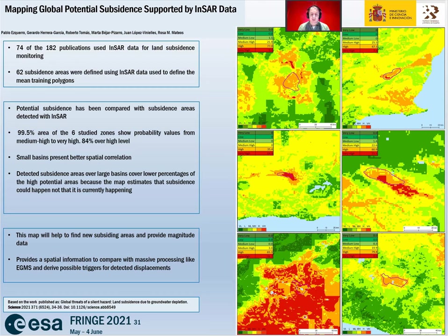After obtaining the final maps, potential subsidence has been compared with already studied areas with land subsidence detected with INSAR. Six selected areas in Spain, Italy, Mexico, China and Indonesia show that 99% of the areas have probability values of medium-high to very high.